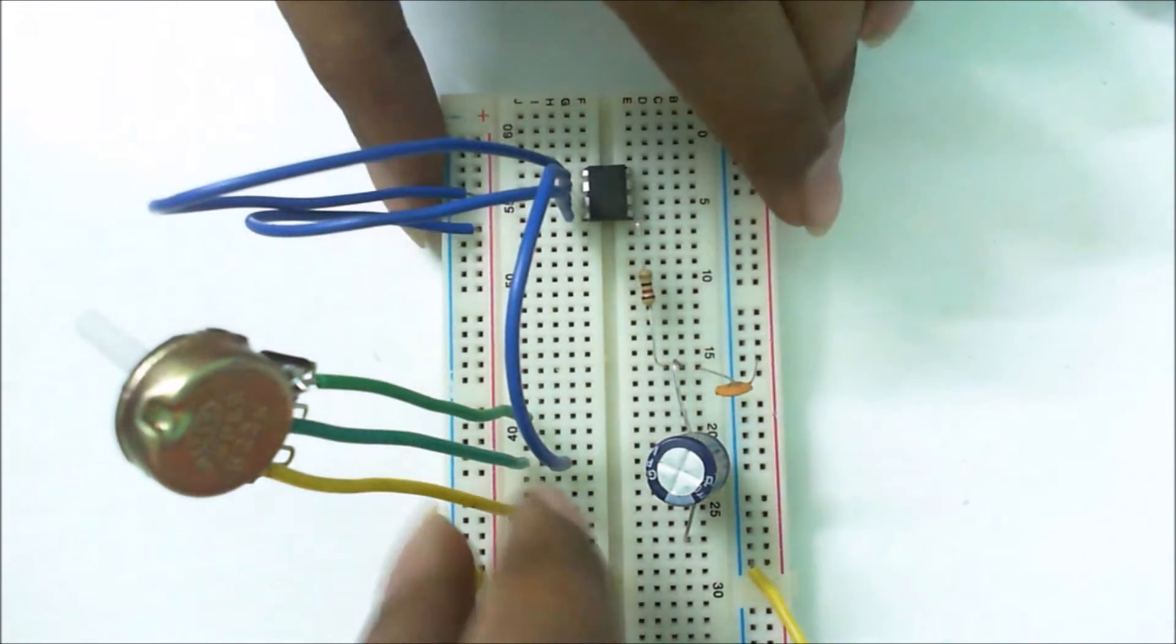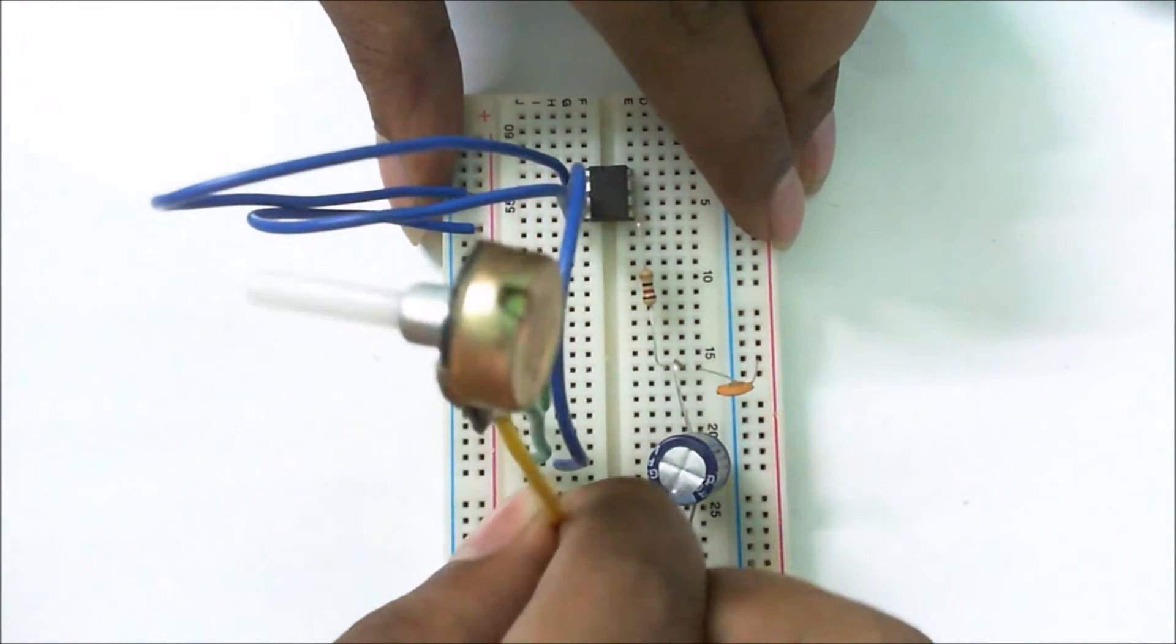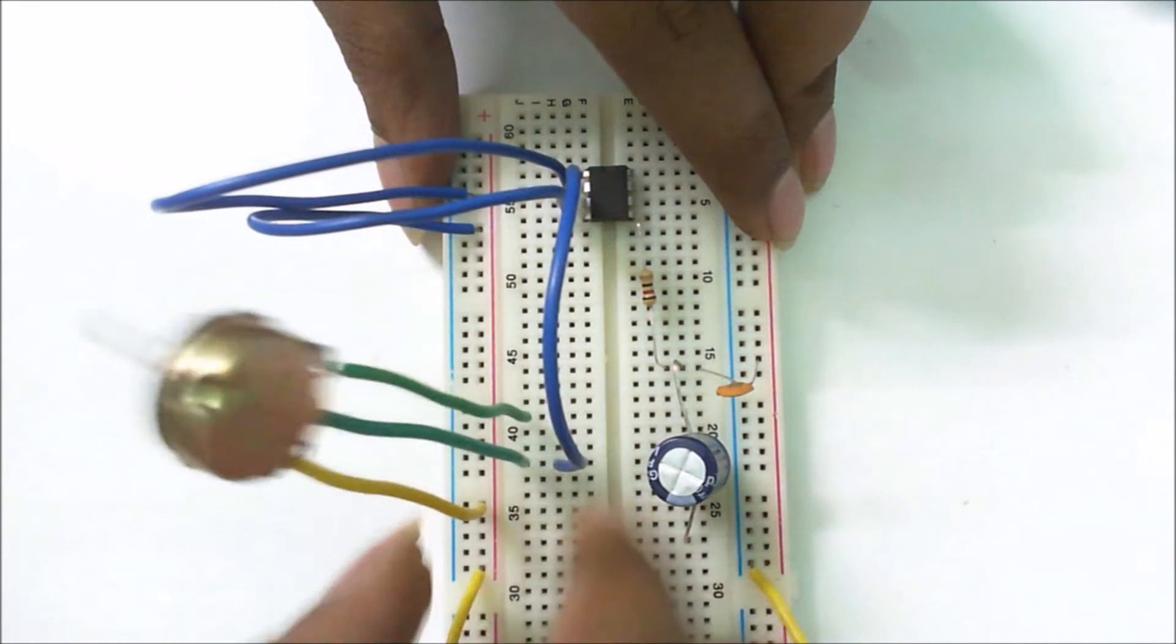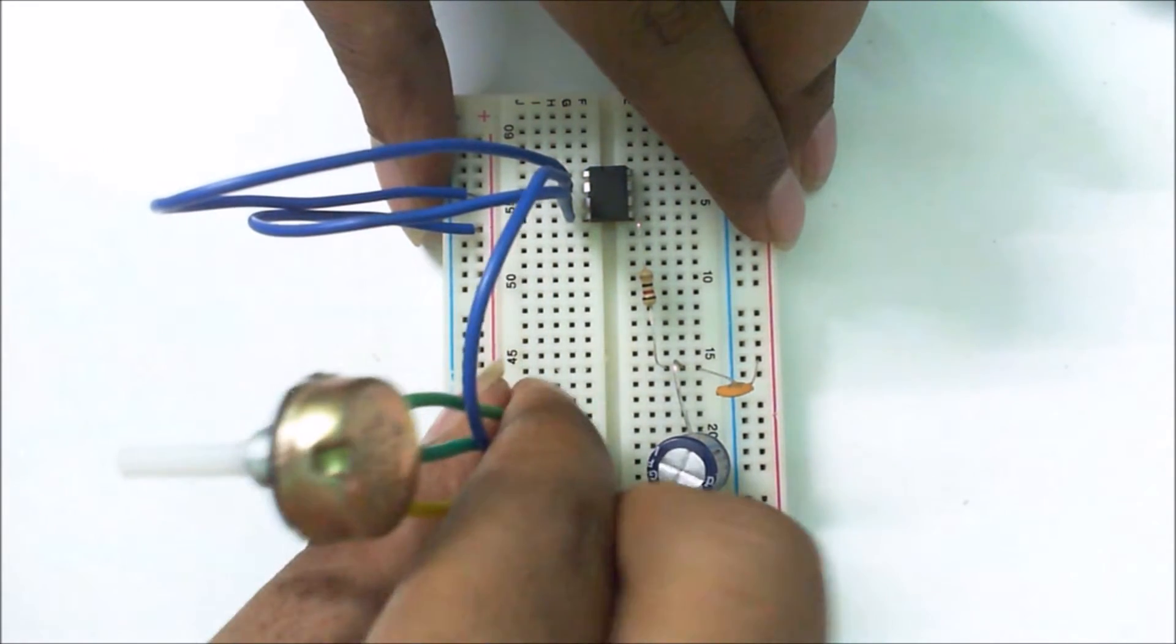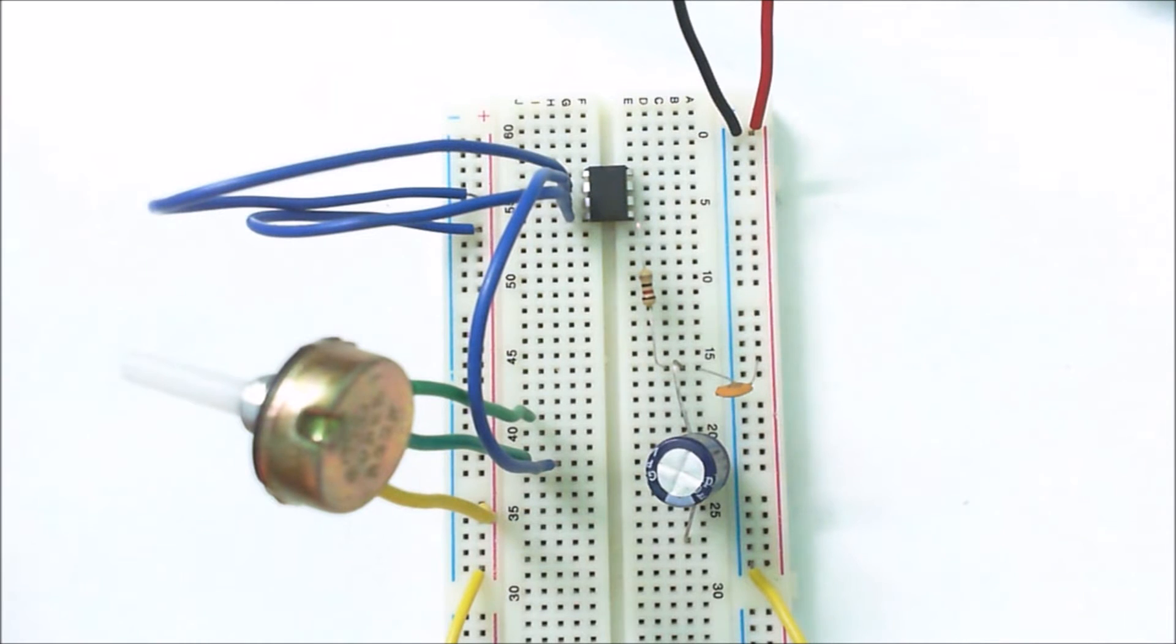Connect pin 6 of LM386. Connect the third pin of potentiometer to ground. Connect pin 6 of LM386 to the positive terminal of the 9 volt battery.